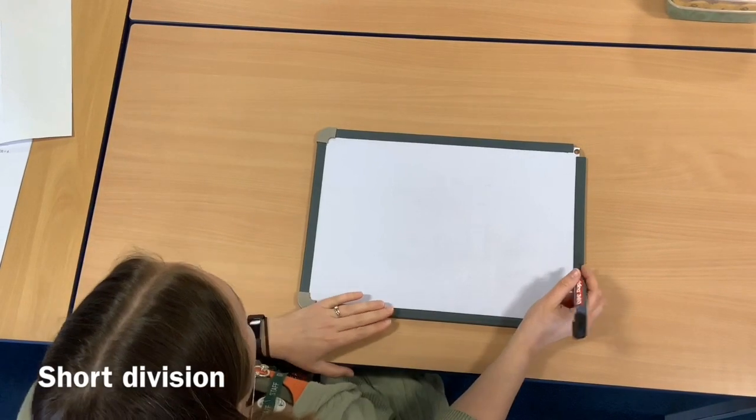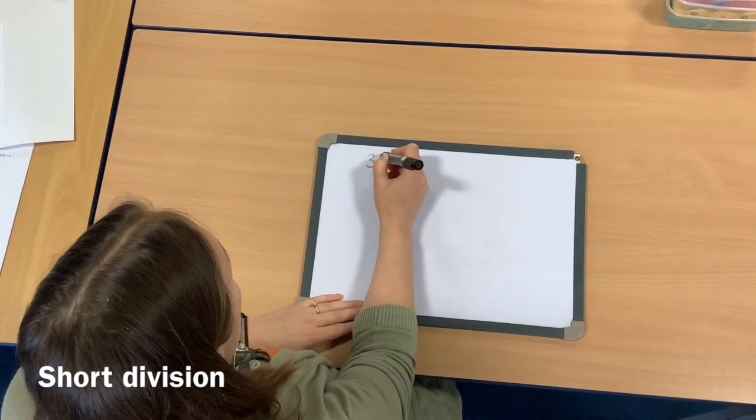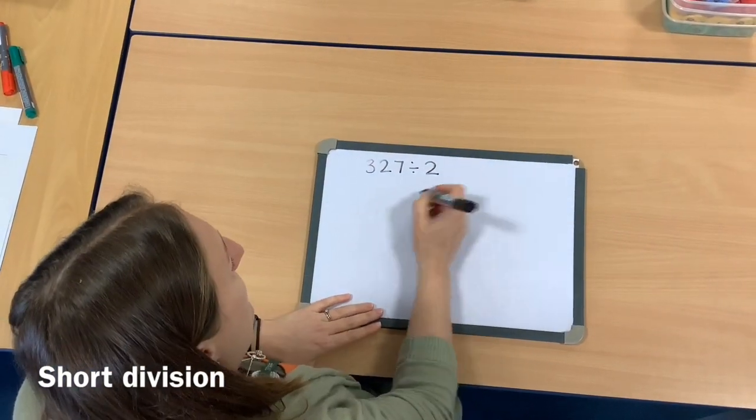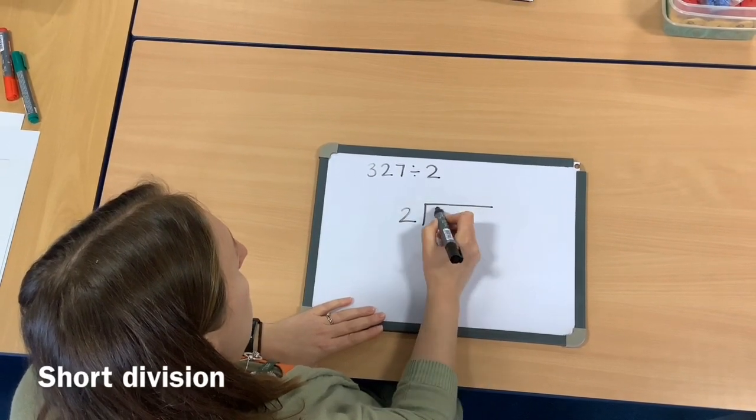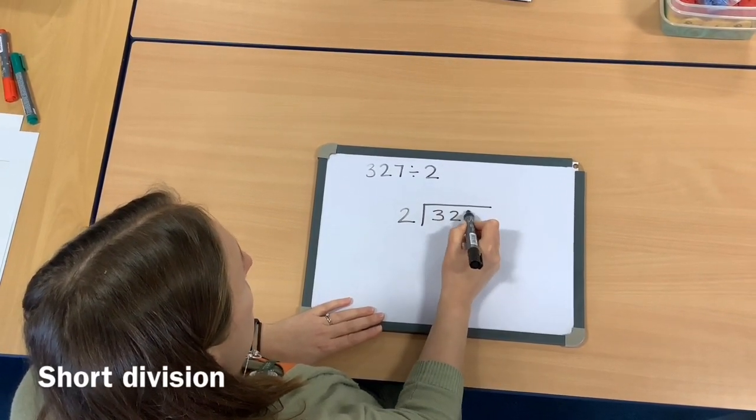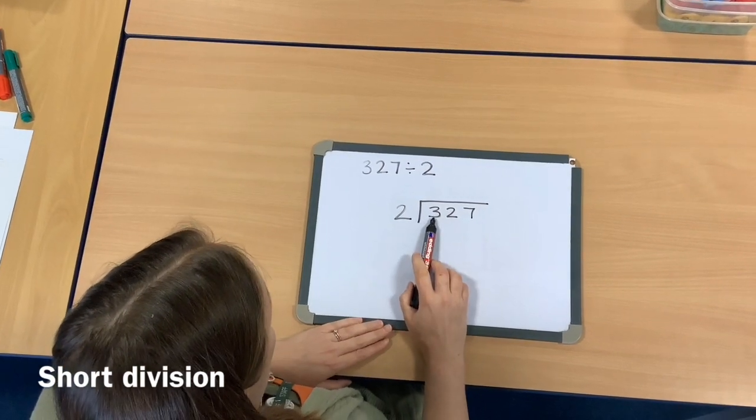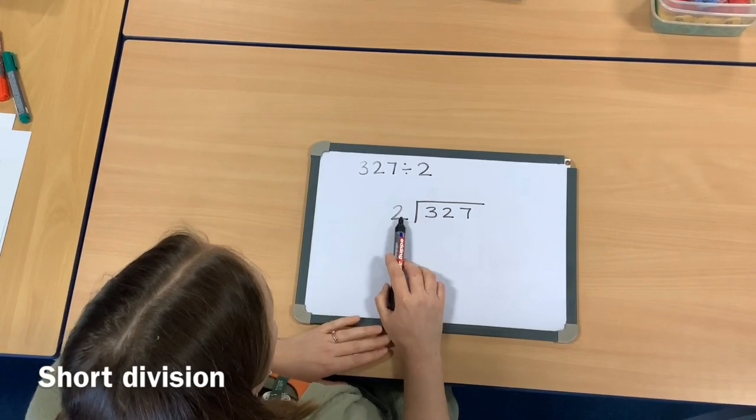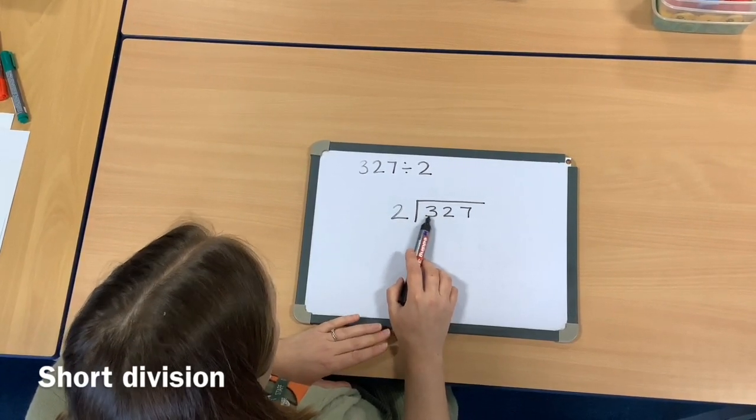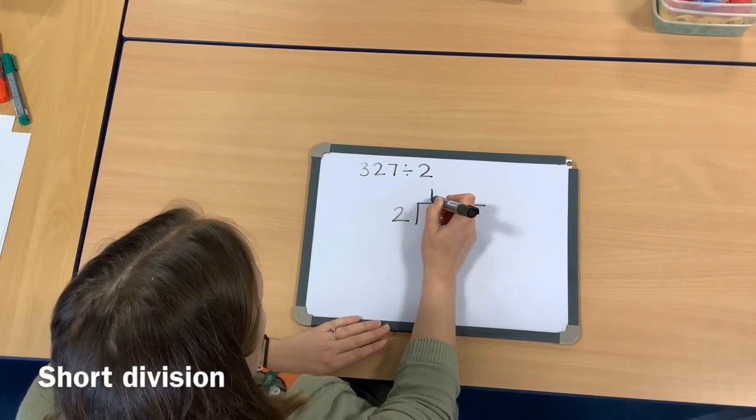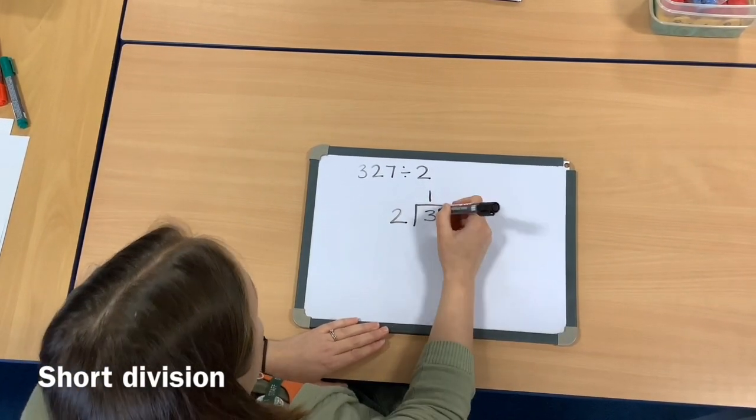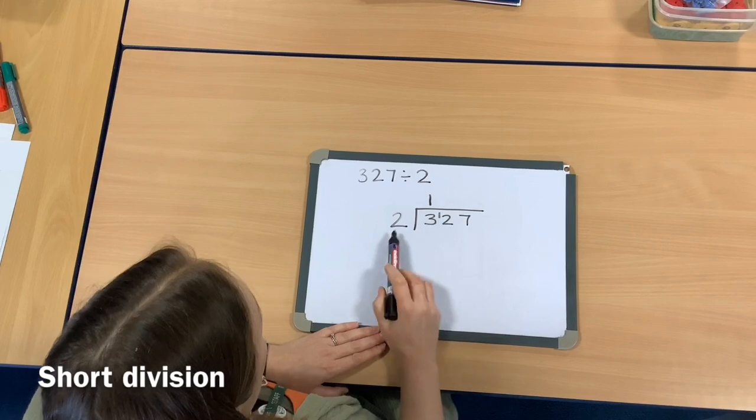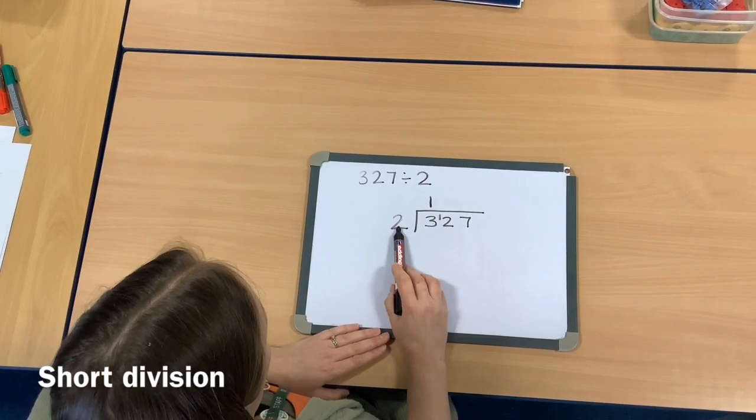We're going to do 327 divided by 2. We set it out in exactly the same way—our divisor is 2 and our dividend is 327. We start with the hundreds, so I've got 3 hundreds. I need to put it into 2 equal groups. I can put 2 of those into an equal group—there'll be 1 in each group and 1 left over. This time we don't bring that 1 down and change it into tens; we add it on to the tens just here. I've done 3 divided by 2, put 1 in each group and 1 left over, and that's my hundreds done.